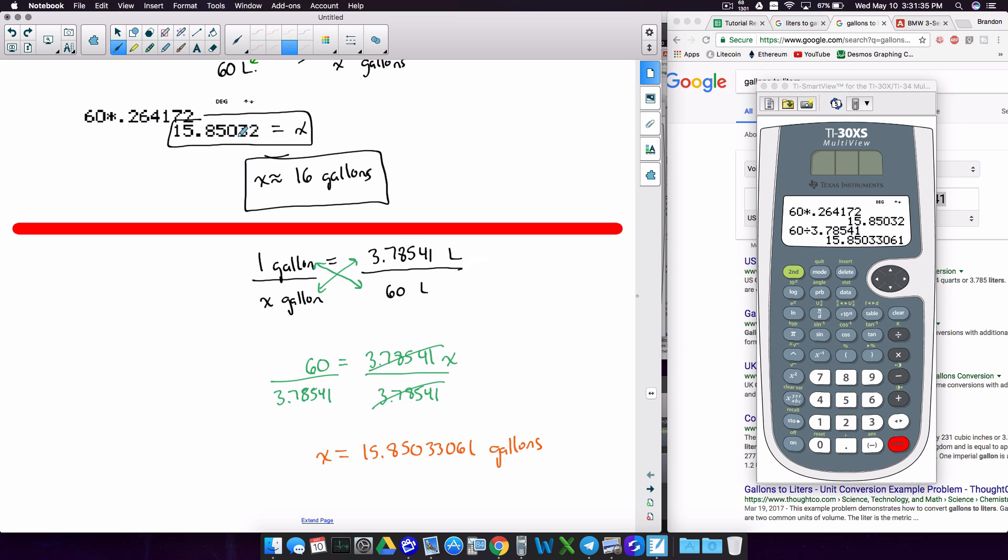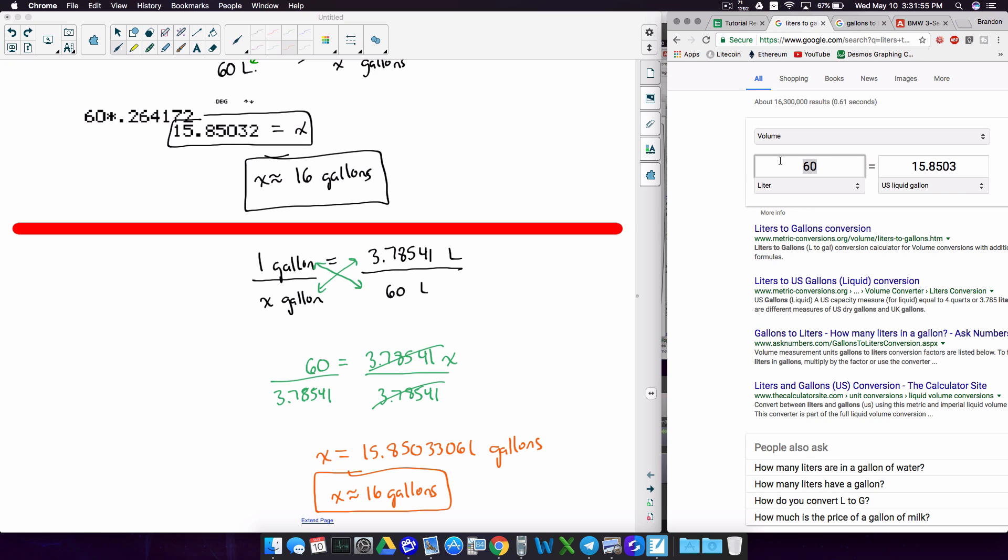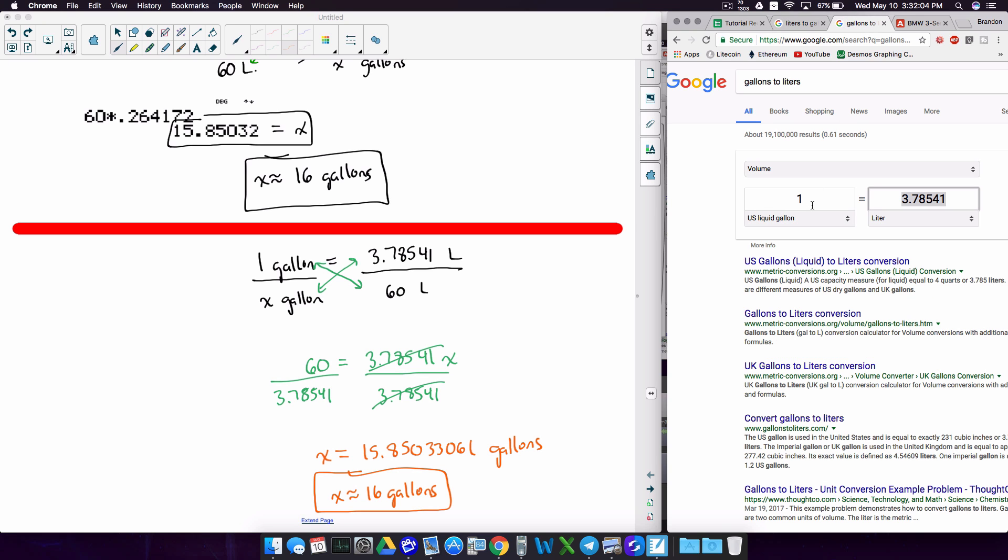Now, notice though, 15.85032, well, 15.85033. Not that big of a difference. Plus, we would pretty much say, hey, this is going to be 16 gallons. Now, by conversion factors, I'm referring to this thing here: one gallon equals this many liters, whereas over here, when I had one liter equals that many gallons. So you notice here I got one liter, whereas in this one I have one gallon.